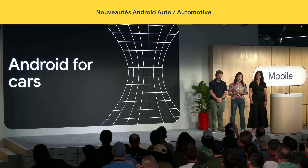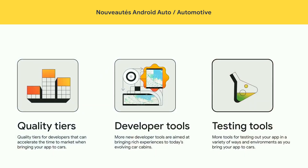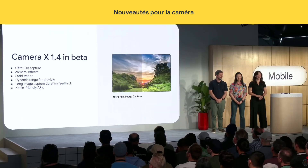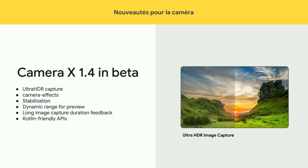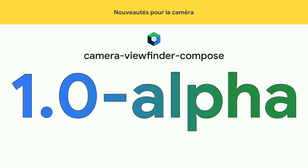For Android for cars, we're releasing a system image for Pixel tablets that runs Android Automotive, so you don't need to expense a new car just to test your app. CameraX is a Jetpack library designed to make your life easier when integrating with camera sensors. The first beta release of CameraX 1.4 brings Ultra HDR image capture, stabilization of both the camera preview and recorded video, and you can now show the preview on screen using a viewfinder composable.